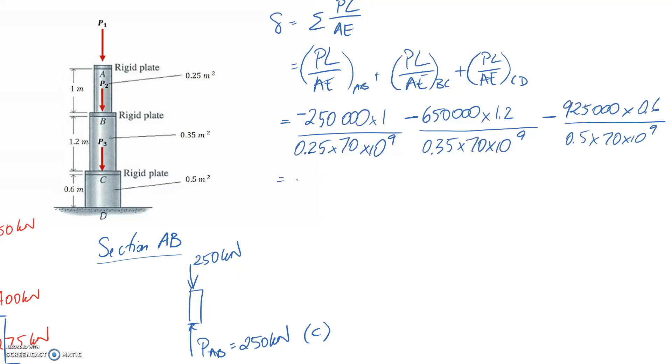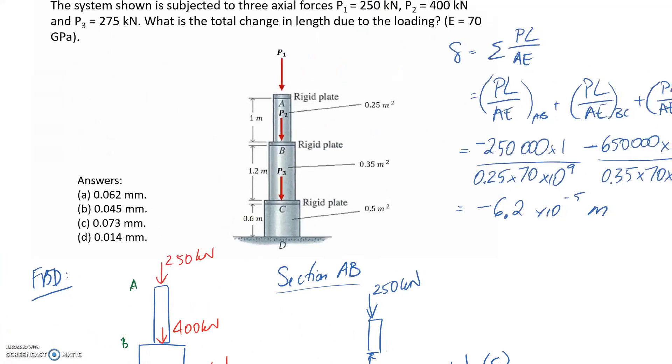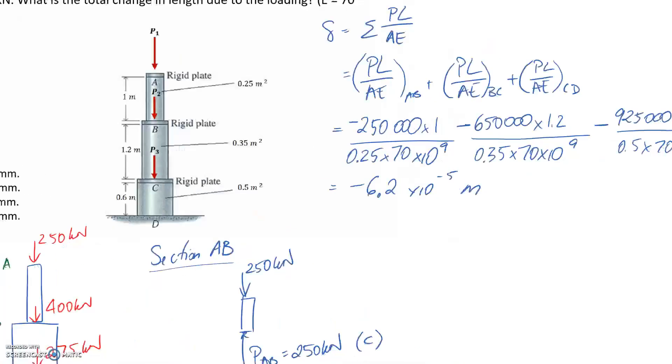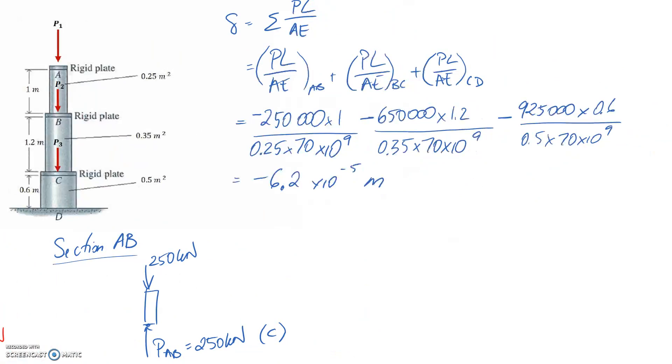If we type all of that into a calculator we end up with negative 6.2 by 10 to the negative 5. Everything's in base units so it comes out in meters. If you want to convert it into millimeters, which makes sense because all of our options here are presented in millimeters, we need to times this by 1000. When we do that it comes out to negative 0.062.